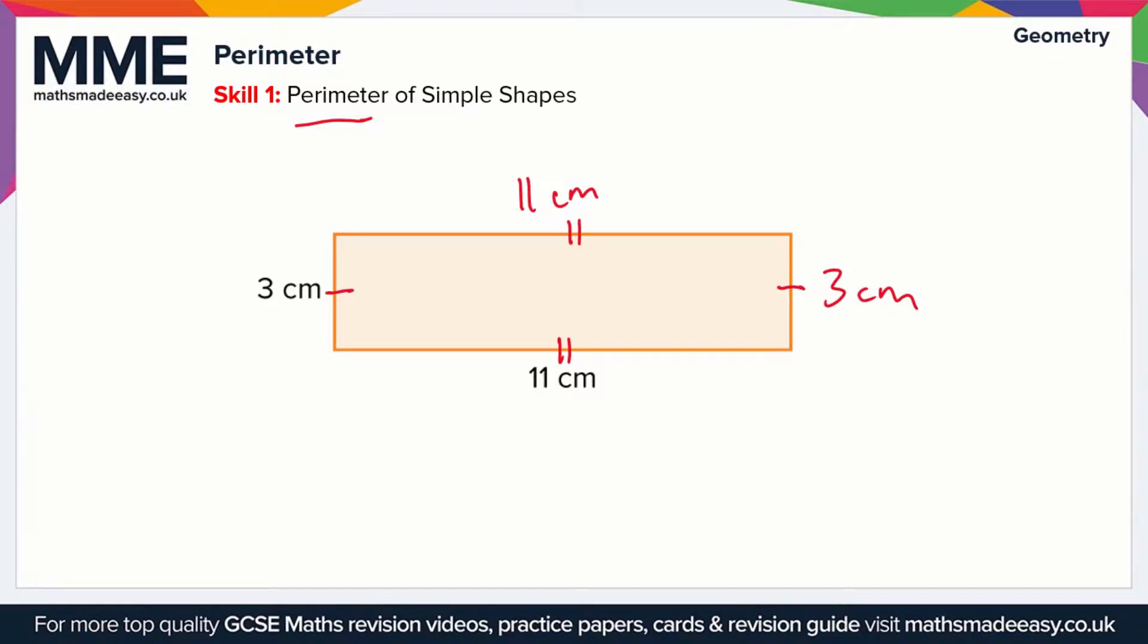So the perimeter is the distance around the edge of the shape. You could just call it P for short. All we have to do to find that is add 3 plus 3 plus 11 plus 11. If you add all of this up you should get 28cm.